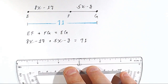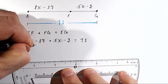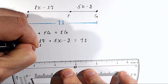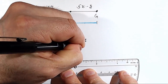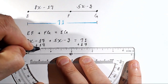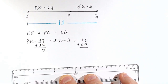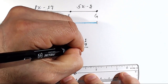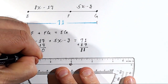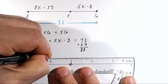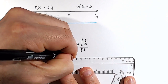Now we want to solve for X. We can start by getting rid of the whole numbers. Because negative 17 is being subtracted on the left, we add 17 to both sides. On the left, negative 17 plus 17 is 0. On the right, 71 plus 17 is 88. So we now have 8X plus 5X minus 3 equals 88.